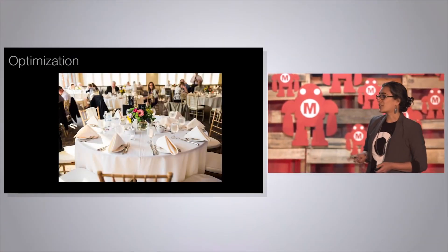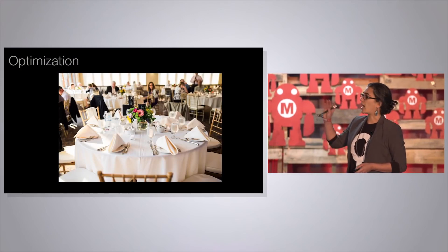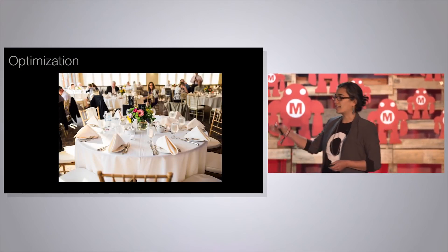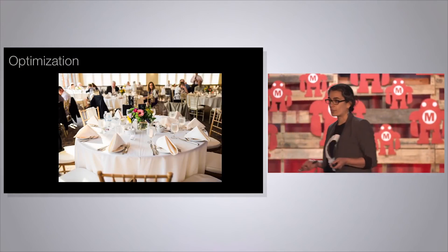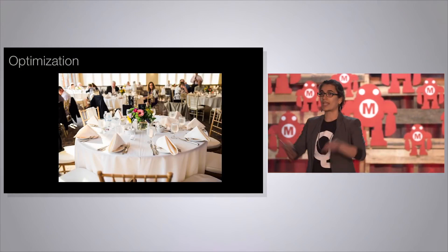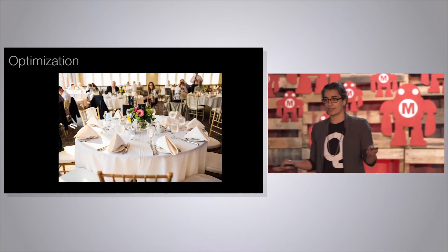I want to start with two examples of things classical computers are really bad at. Maybe they can solve small versions of these types of problems, but by the time the problem gets big enough to be interesting, we just run out of computing horsepower. The first example is optimization — finding the best solution to a problem among many possible solutions.